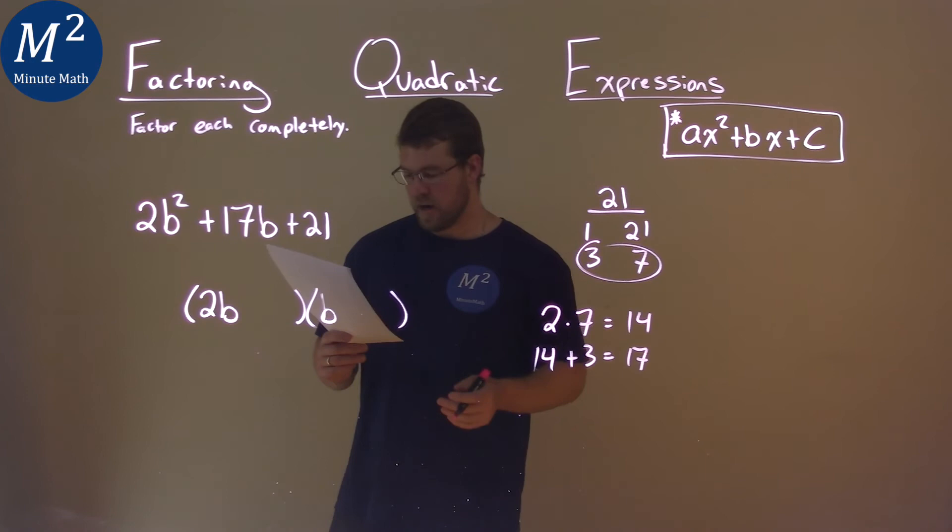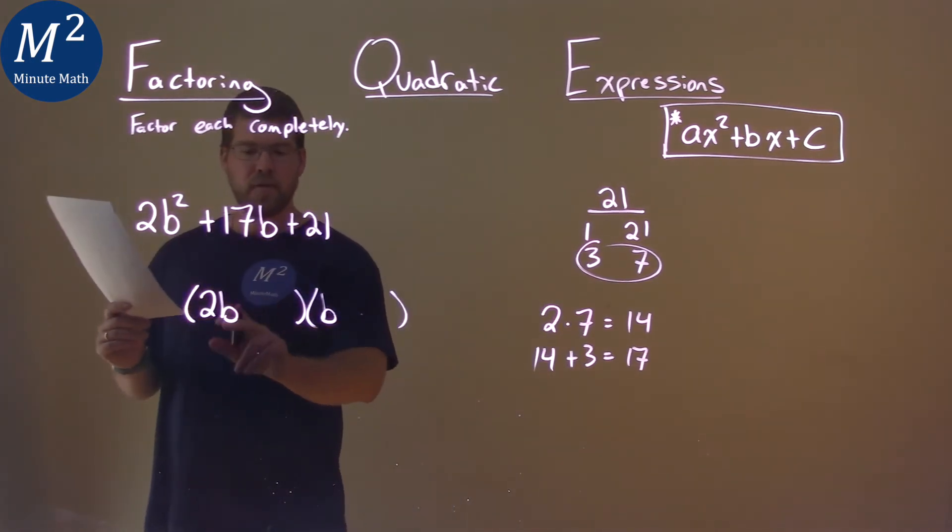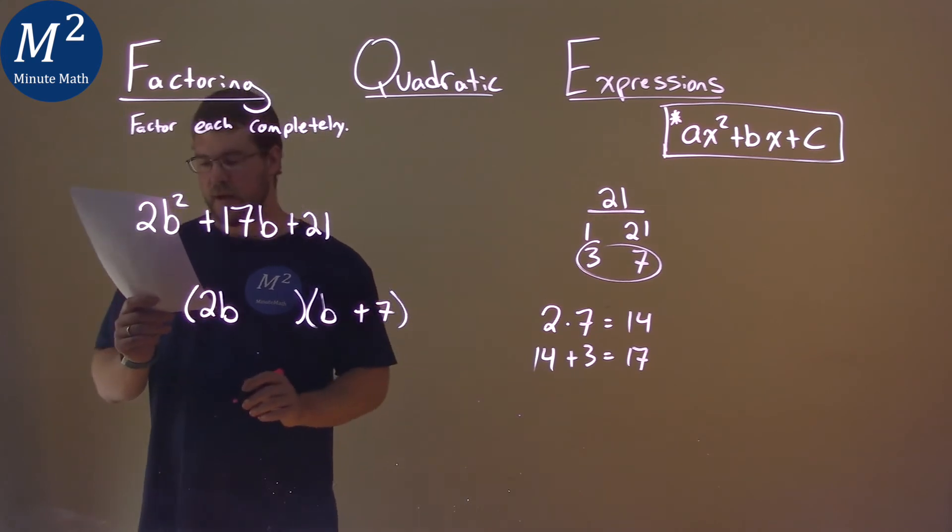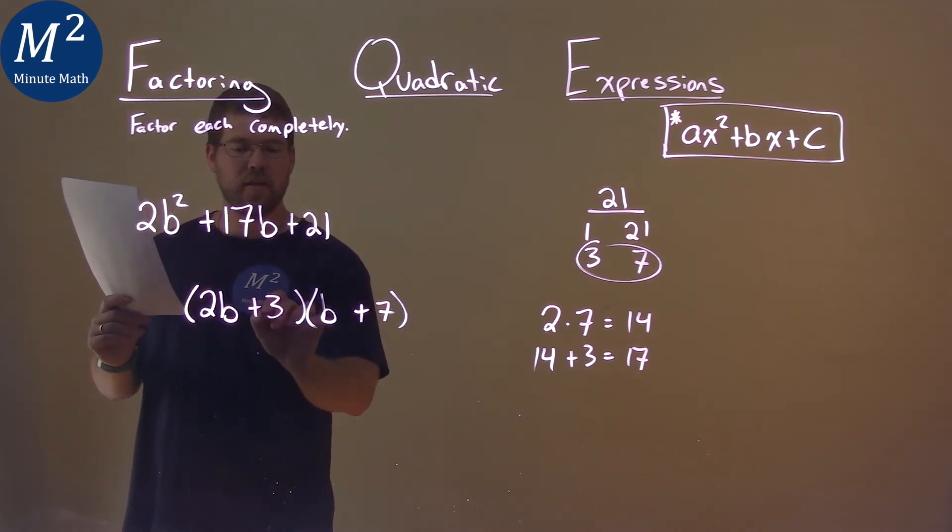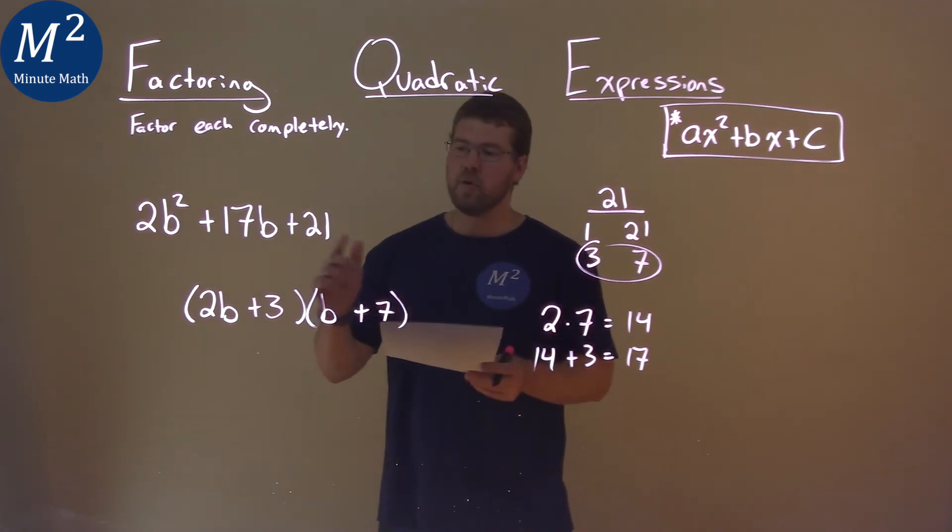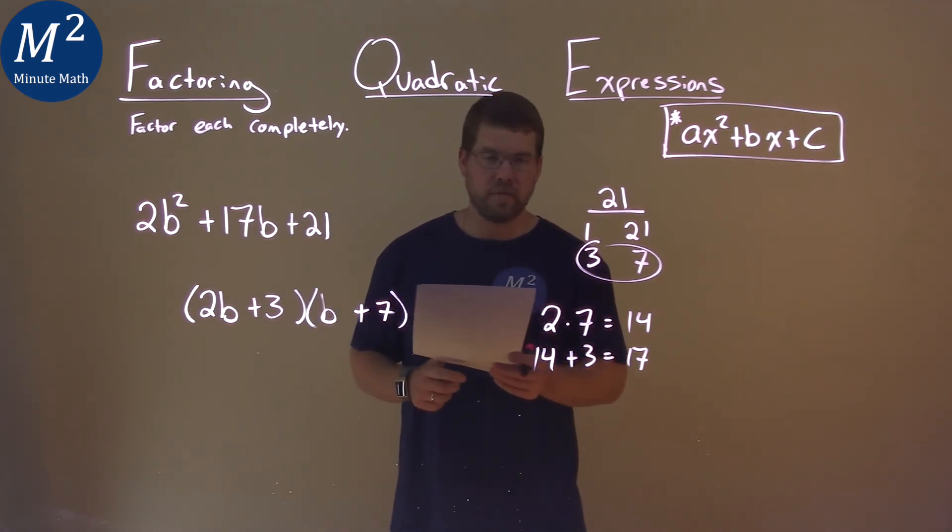So we have our pair, we can go put them in right here. 2b has to be multiplied by the 7, so I'll put the 7 on this side, and the 3 goes on this side. And so my final answer in factored form is 2b plus 3 times b plus 7.